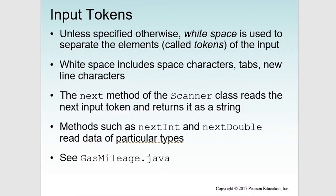Whitespace is used to separate the elements, called tokens, of the input. Whitespace includes space characters, tabs, and new line characters. The next method of the Scanner class reads the next input token and returns it as a string. Methods such as nextInt and nextDouble read data of particular types.